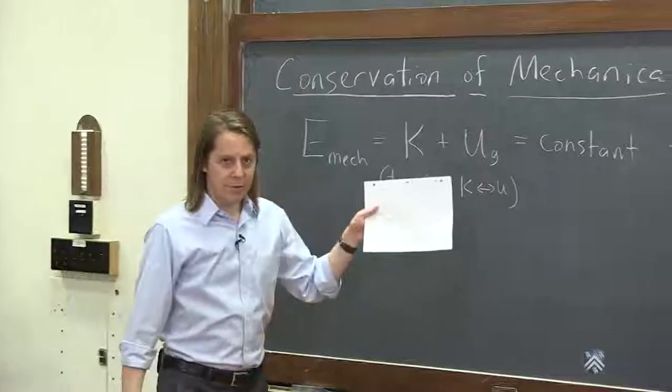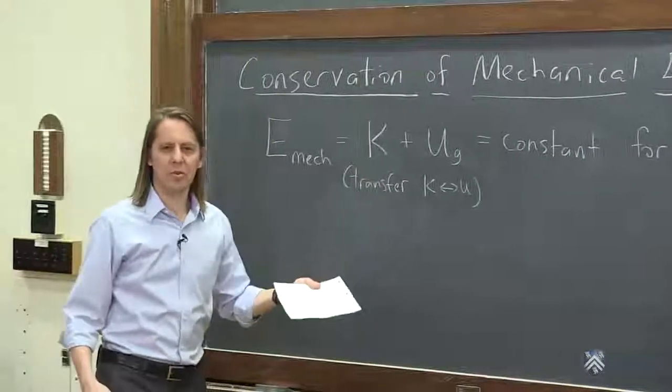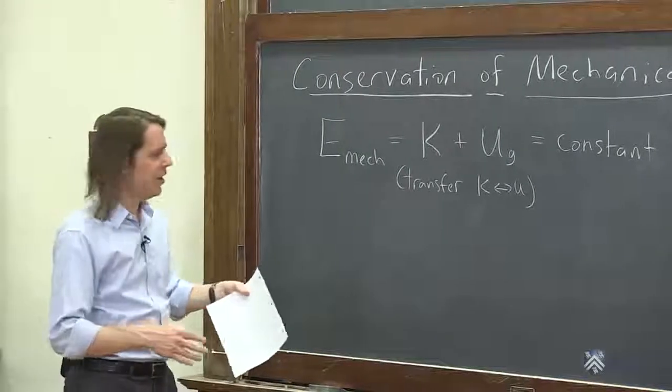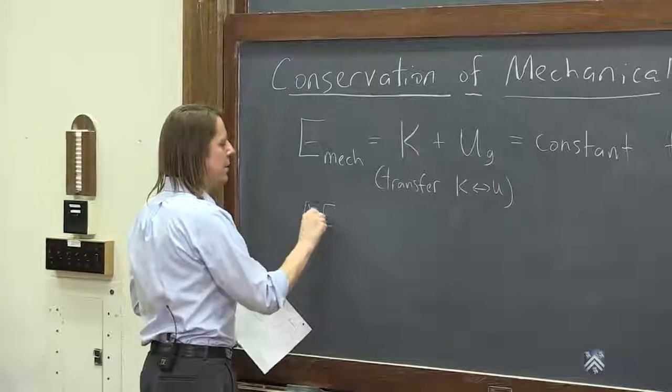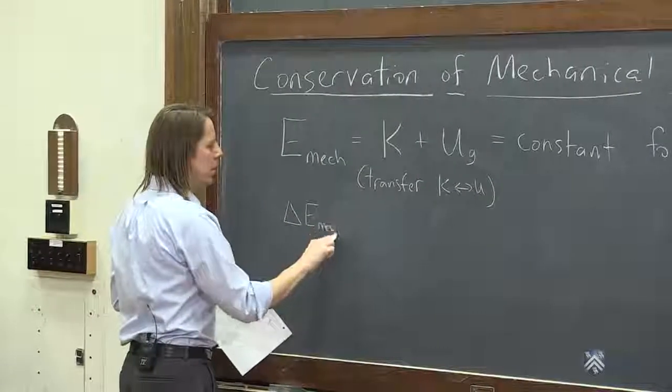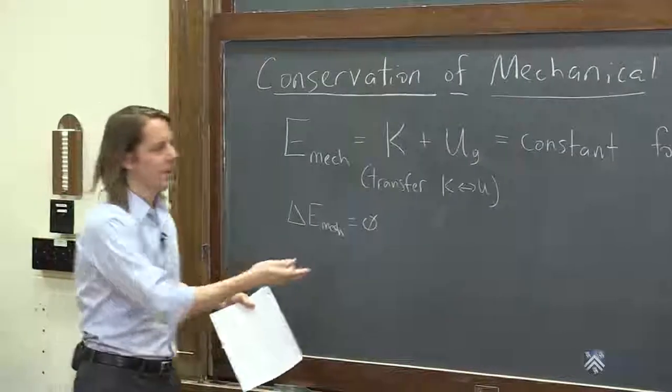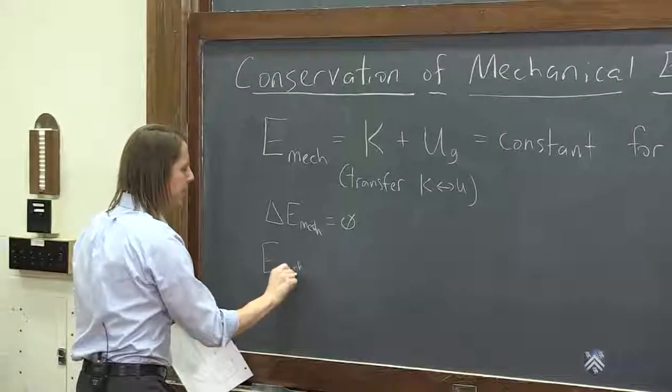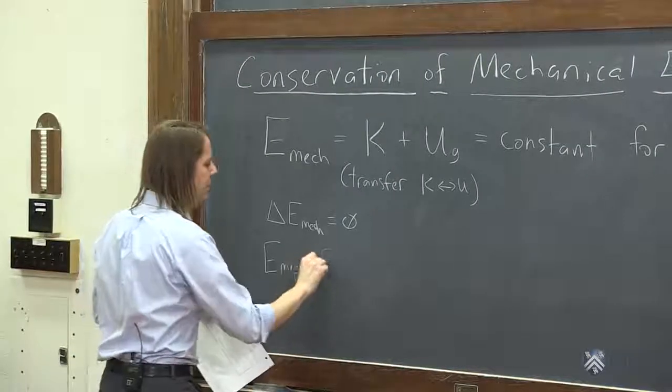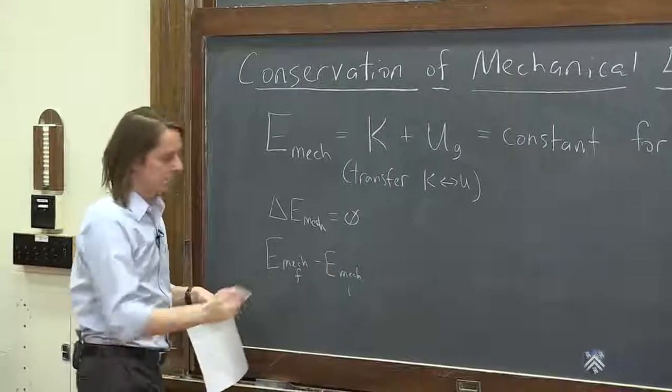So this is a fairly simple idea. You'll see it written different ways in books. Because it's a constant, we think of it in terms of changes a lot. So another way to say this is that the change in mechanical energy is zero. Same thing, right? If it's constant, that means we could write it this way. The final mechanical energy minus the initial mechanical energy is zero.